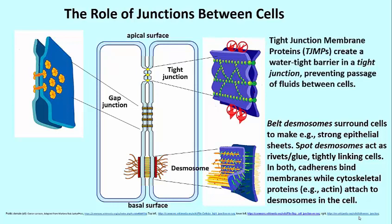Tight junctions, if you look at the upper right, are held together by tight junction membrane proteins, or TJMPs. What these do is create a watertight seal between two cells. What you see in the upper right is some dissolved substances above the tight junction membrane protein complexes, but not being able to get through.